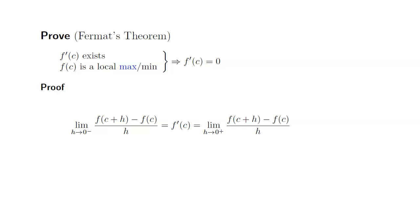I'm going to look at the left-hand limit first. Since h is approaching zero from the negative side, we know that h is negative. Since f(c) is a local maximum, f(c+h) - f(c) is going to be less than or equal to zero.